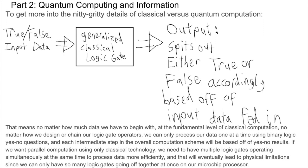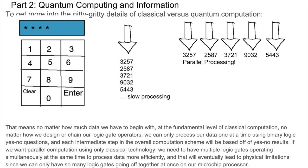That means no matter how much data we have to begin with, at the fundamental level of classical computation, no matter how we design or chain our logic gate operators, we can only process our data one at a time using binary logic yes-no questions, and each intermediate step in the overall computation scheme will be based off of yes-no results. If we want parallel computation using only classical technology, we need to have multiple logical gates operating simultaneously at the same time to process data more efficiently, and that will eventually lead to physical limitations since we can only have so many logic gates going off together at once on our microchip processor.